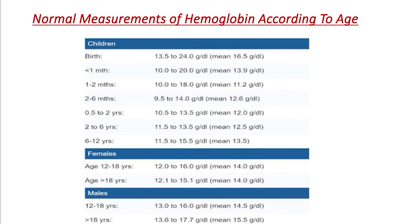For the next age group, the average is 12.6 gram per dL normally.